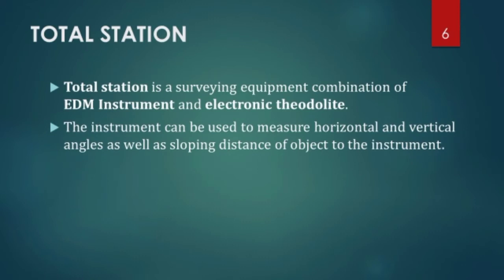So that was about EDM and we are getting into our main topic, total station. Total station is a surveying equipment, it is a combination of an EDM instrument and electronic theodolite. We know what theodolite is, we use theodolite for angle measurement, horizontal angle and vertical angles, accurate angle measurements. So an electronic theodolite and EDM instrument is both combined inside total station, so total station can be used to measure horizontal and vertical angles as well as sloping distance of object to the instrument.